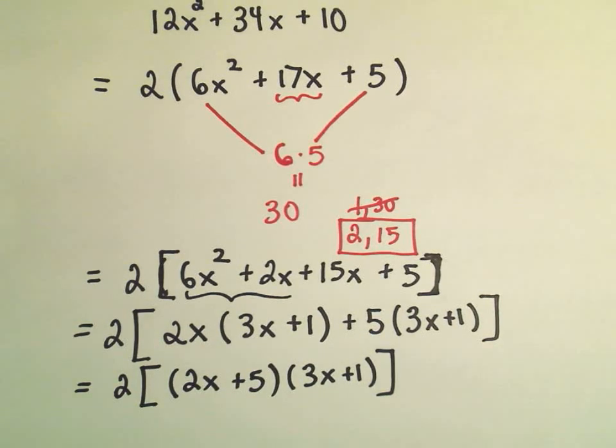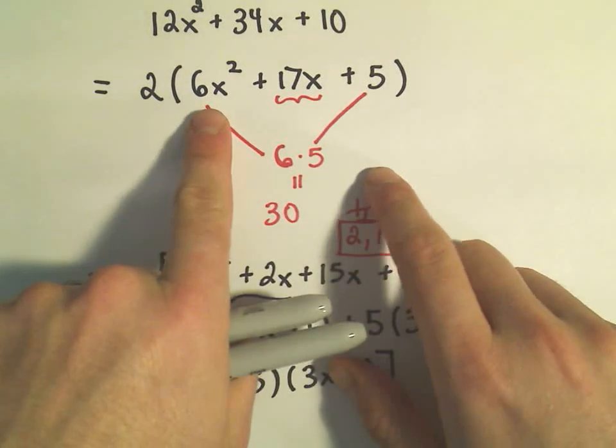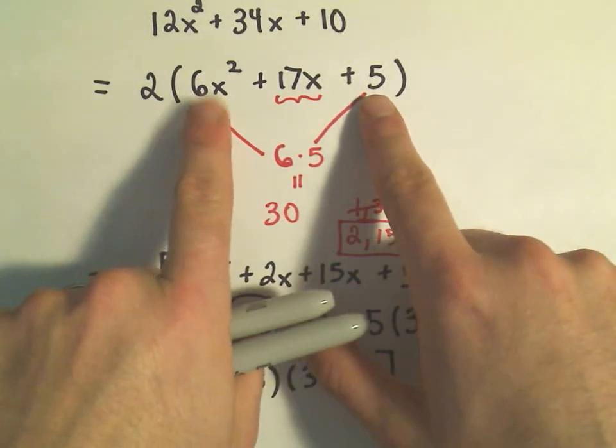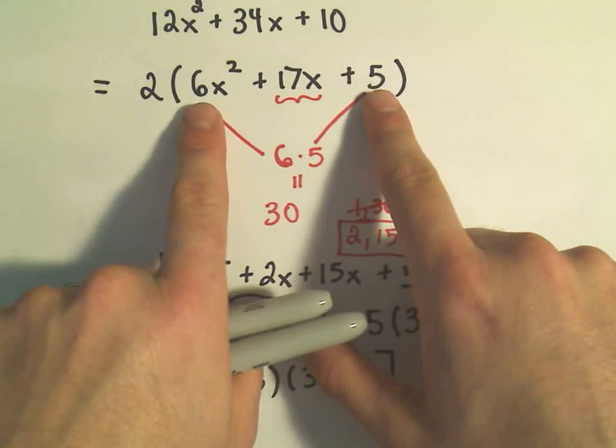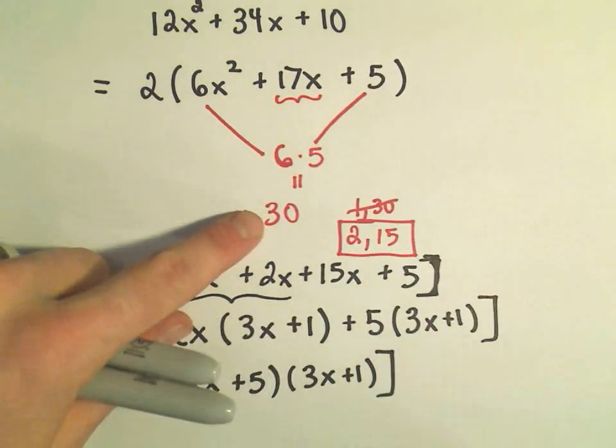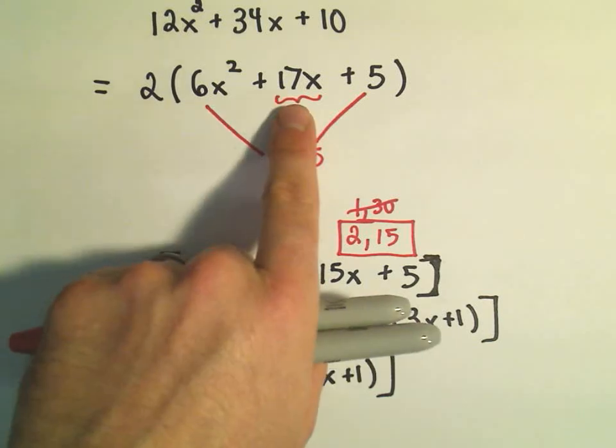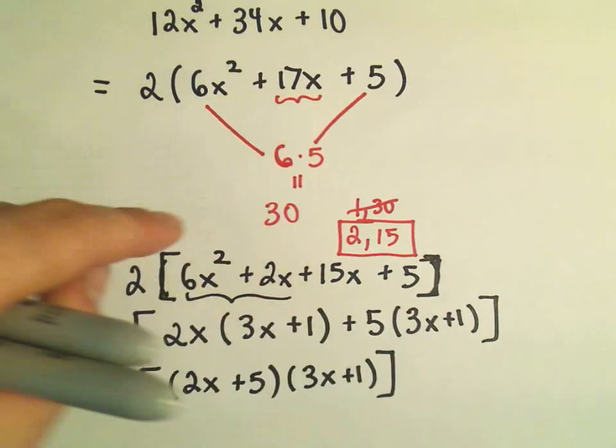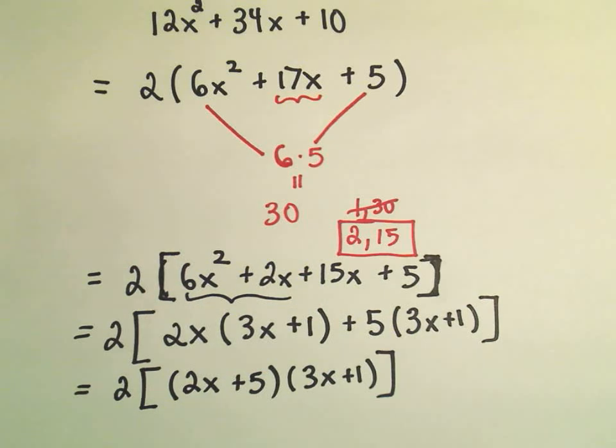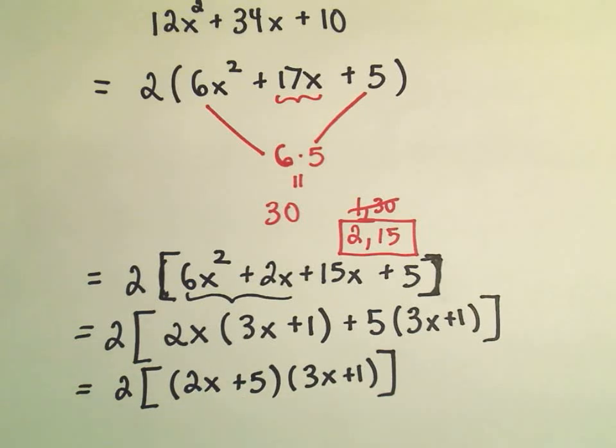Okay, so this is the method. This is the idea of factoring by grouping. Again, you look at the coefficient on the squared term. You look at the constant. You multiply those. And then you're thinking about factors. What multiplies to give me that number but adds up to the middle number. Okay, so again, there's no guaranteeing that factoring by grouping is always going to work. But if things do factor relatively nicely with whole numbers, this method will work and will get you there.